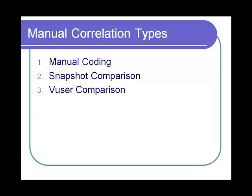The third and the recommended method of correlation is vuser comparison, where the same script is captured twice and a win difference is done on the script and the differences are correlated.